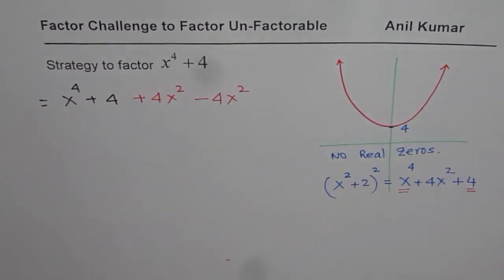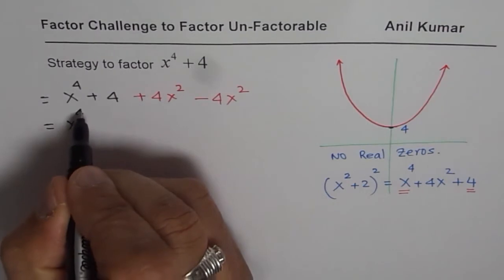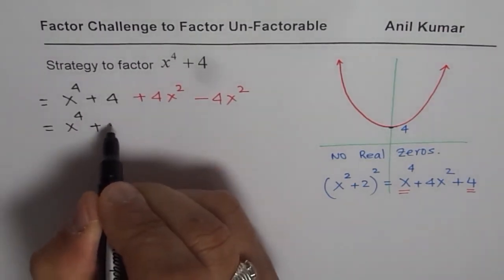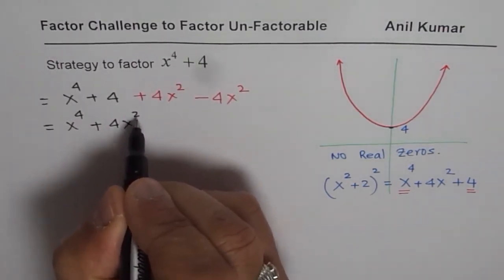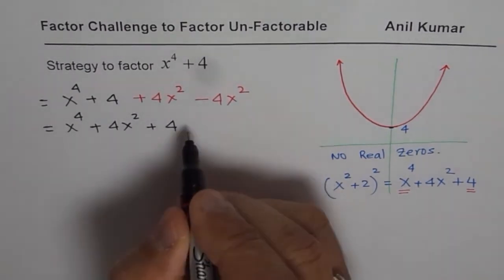Now we can actually rearrange. So if I rearrange it like this, x to the power of 4 plus, let us say 4x square plus 4 and then we have here minus 4x square.